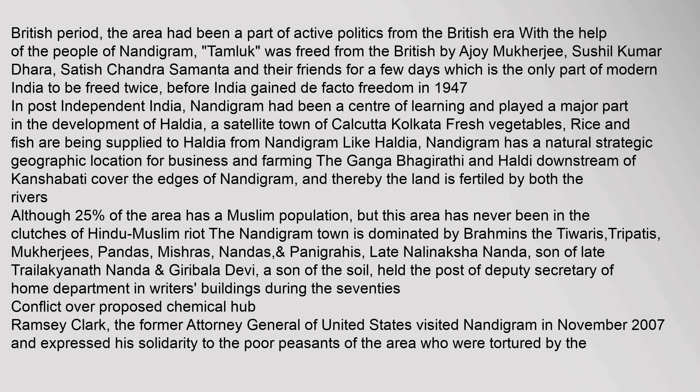Before India gained de facto freedom in 1947, Nandigram had been a centre of learning and played a major part in the development of Haldia, a satellite town of Calcutta (Kolkata). Fresh vegetables, rice and fish are being supplied to Haldia from Nandigram. Like Haldia, Nandigram has a natural strategic geographic location for business and farming. The Ganga-Bhagirathi and Haldi, downstream of Kanchabati, cover the edges of Nandigram, and the land is fertilised by both rivers. Although 25% of the area has a Muslim population, this area has never been in the clutches of Hindu-Muslim riot.